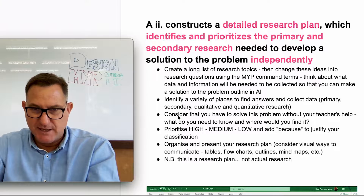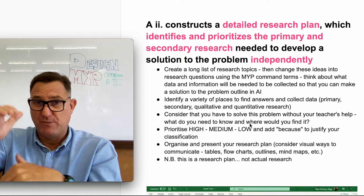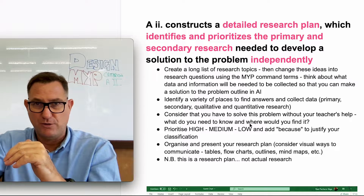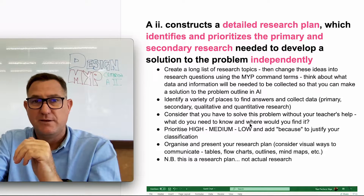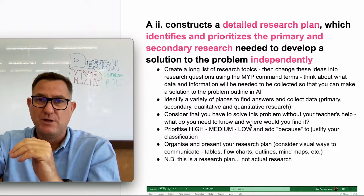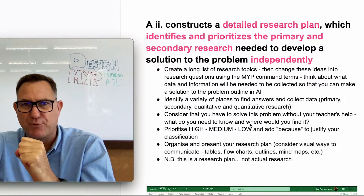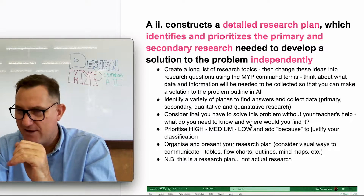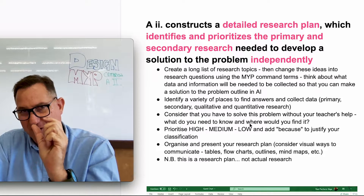The next step is prioritizing. Once you have your research topics and questions, go through them and label each one high, medium, or low priority. Then add a sentence explaining why. For example: 'This is a high priority because it is essential to me building my product,' or 'This is low priority because it doesn't really impact my solution.' Identify the priority level and explain why with the word 'because.'